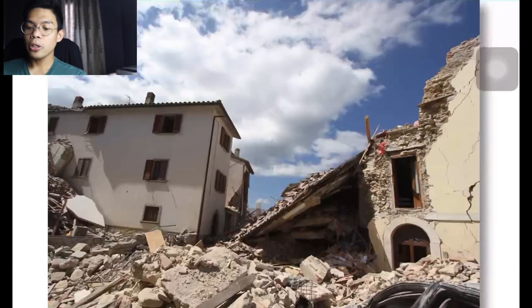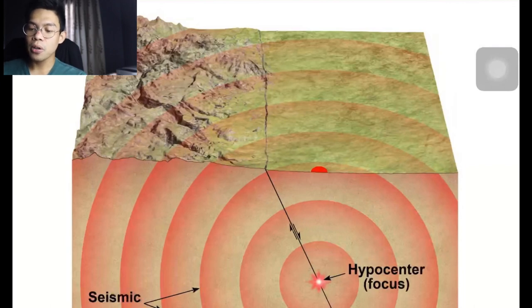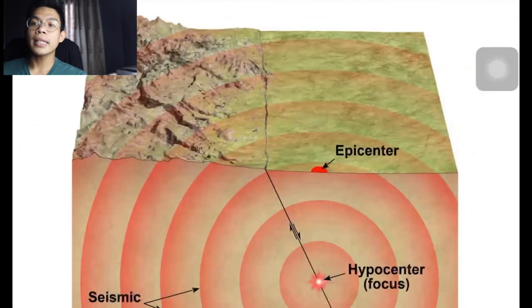When an earthquake occurs, it releases large amounts of energy in the form of seismic waves. These waves radiate from the source, called the focus, through the lithosphere and deep into Earth's interior. To locate an earthquake on a map, seismologists first plot the epicenter — the point on Earth's surface that lies directly above the focus.